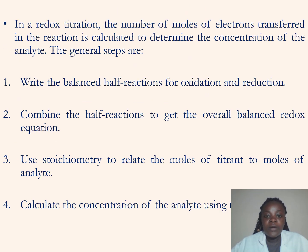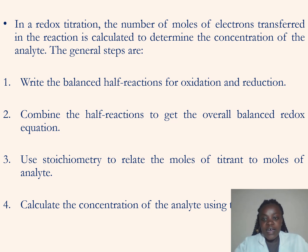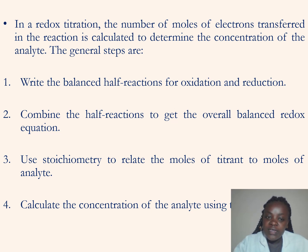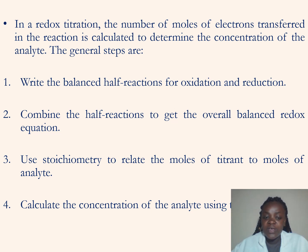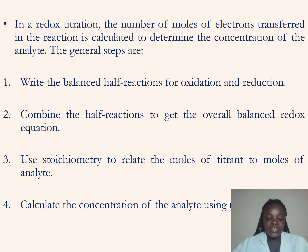In a redox titration, the number of moles of electrons transferred in the reaction is calculated to determine the concentration of the analyte — this is very similar to a direct titration. We use the concentration of the titrant to get the concentration of the analyte. Here we are dealing with electrons transferred from one substance to another, which helps us determine the concentration of the analyte.